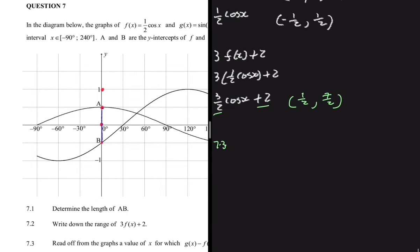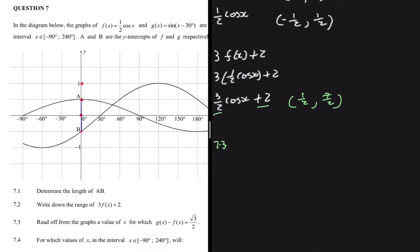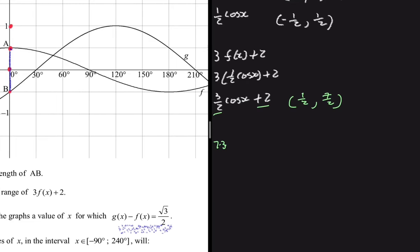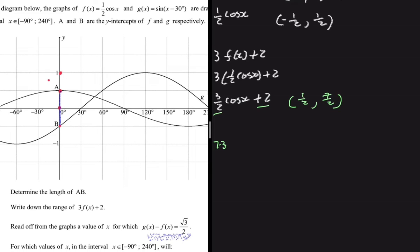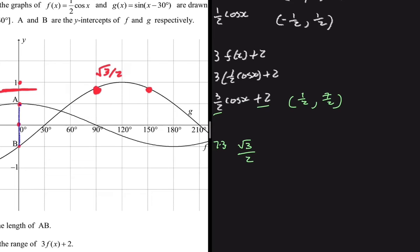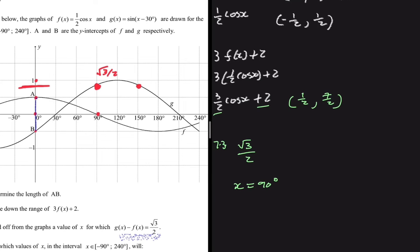Now 7.3. The question asks us to read off from the graphs a value of x for which g(x) minus f(x) equals √3/2. Note that √3/2 is approximately 0.87. We have 90 and 150 marked on the graph. At x = 90 degrees, g(x) = √3/2 and f(x) = 0, so g(x) minus f(x) equals √3/2.